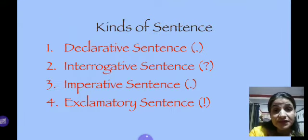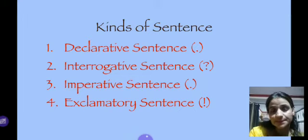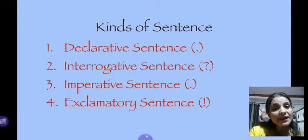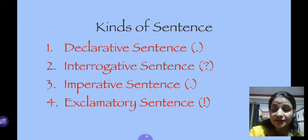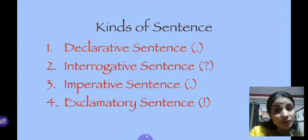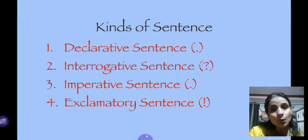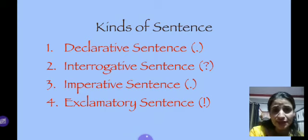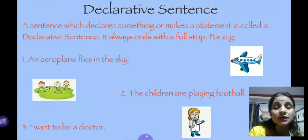When I talk about kinds of sentence, let's learn the kinds of sentence. There are four kinds of sentence on the basis of purpose. Number one: declarative sentence — it ends with a full stop. Number two: interrogative sentence — it ends with a question mark. Number three: imperative sentence — it again ends with a full stop. Number four: exclamatory sentence — it ends with an exclamation mark. Now let's learn them one by one.